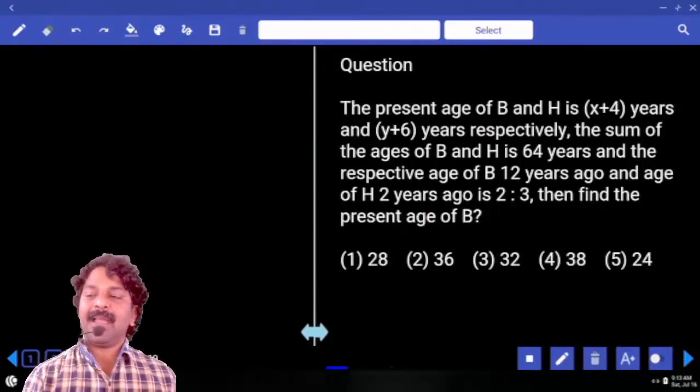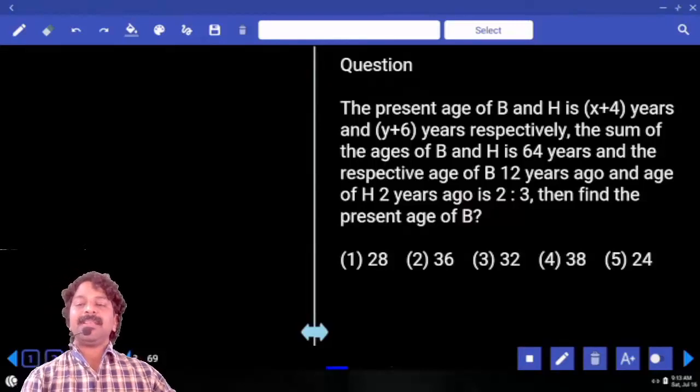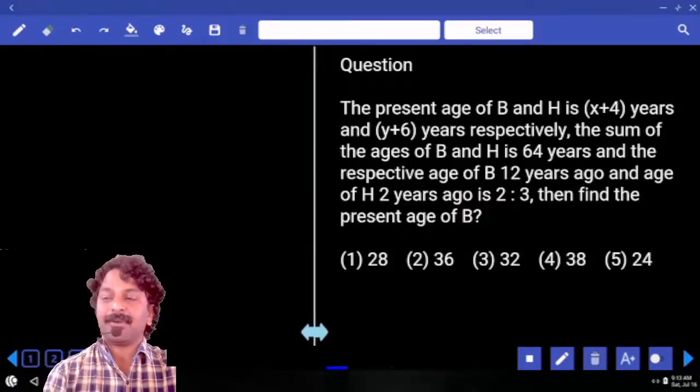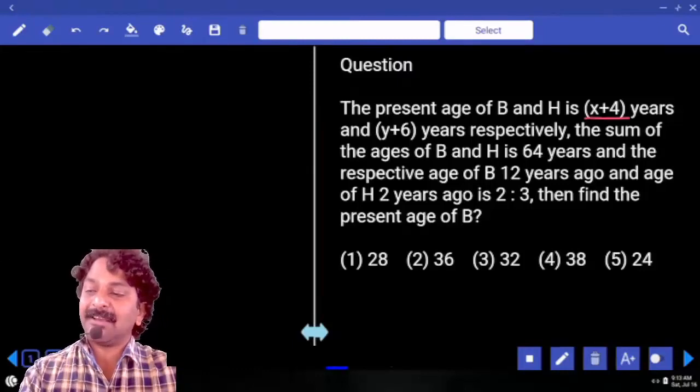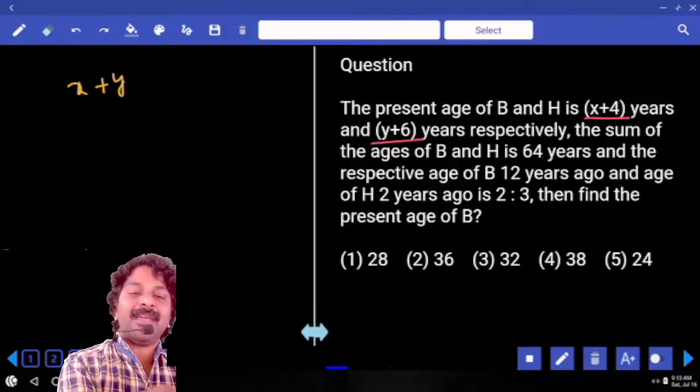The present age of B and H is x plus 4 years and y plus 6 years respectively. Sum of ages of B and H is 64. Sum of present ages of B and H, in the sense, x plus y plus 10 is equal to 64.